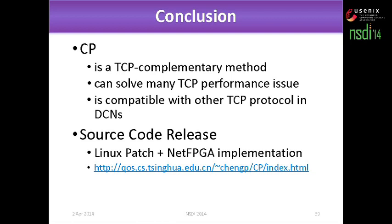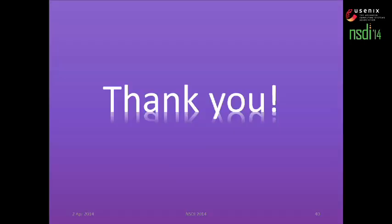In conclusion, our method is a TCP complementary method. It can solve many TCP performance issues and is compatible with other TCP protocols in data center networks such as DC-TCP. We have a lot of results comparing our solution with DC-TCP that we didn't show in this presentation. We also released our source code — it's on the website. Thank you.